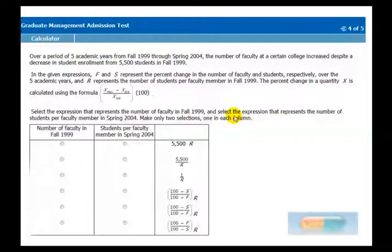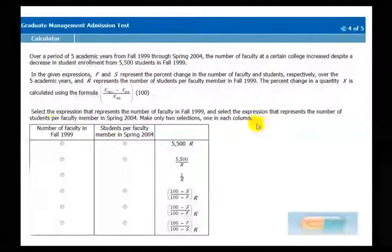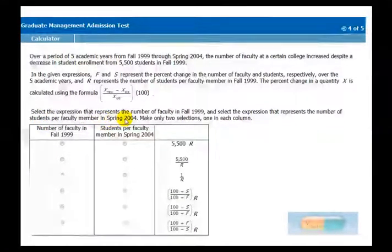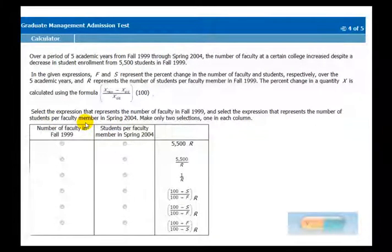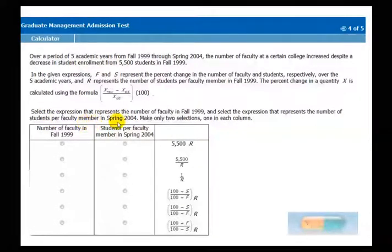Okay, so the next question asks you which expression represents the number of students per faculty member in 2004. We're looking for some kind of ratio where students is on top, faculty member is on bottom, and this is for the year 2004.